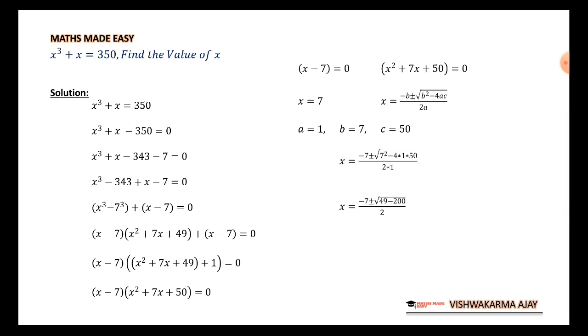But, let's do it. See, 49 minus 200 is minus 151. You can write it as 151 times minus 1. Now, inside the root, minus 1 inside the root is always written as i. So, the value of x, what we got is minus 7 plus root of 151i by 2. And the other one is x is equal to minus 7 minus root of 151i upon 2.